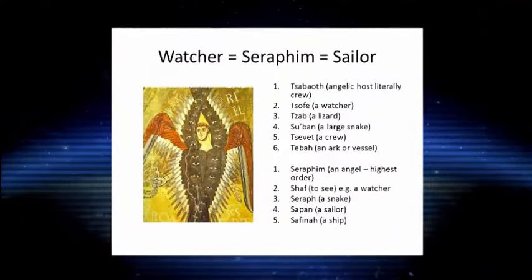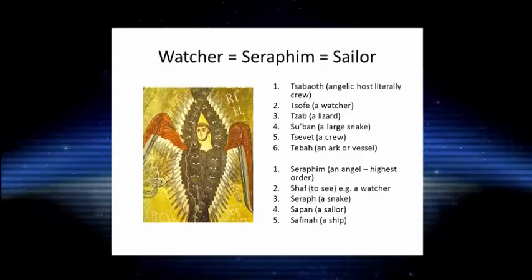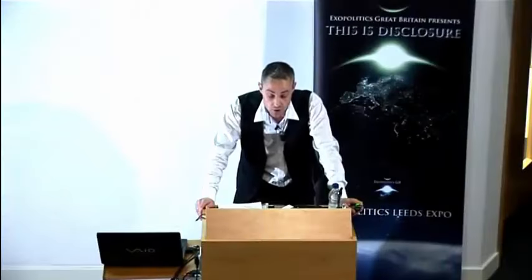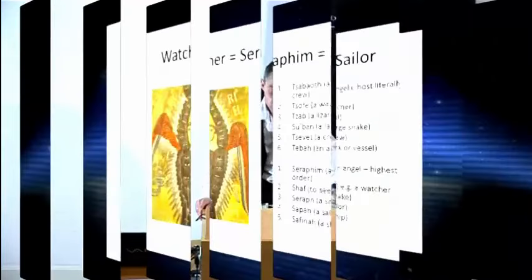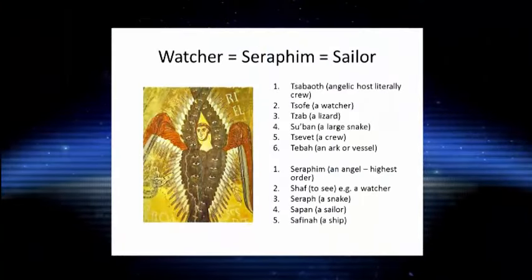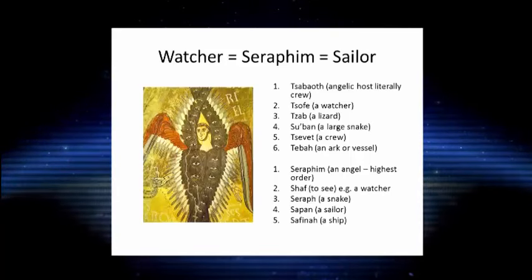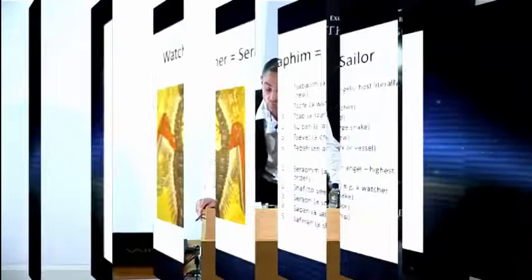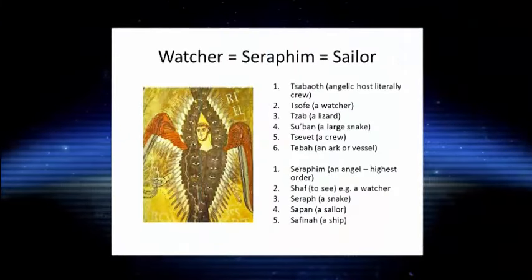I want to make the quick connection between Saba — lizard — identified in Arabic with Saba, which is the host, and Subban — a large snake. These are word plays on the dragon. We see that the seraphim is depicted with the watching eye — a symbol of the seraphim, the dragon, or a type of deity. The etymological connection between the seraphim and shaft — the verb to see — is obviously related to seraph — a snake — sapon — a sailor — and saphena — a ship.